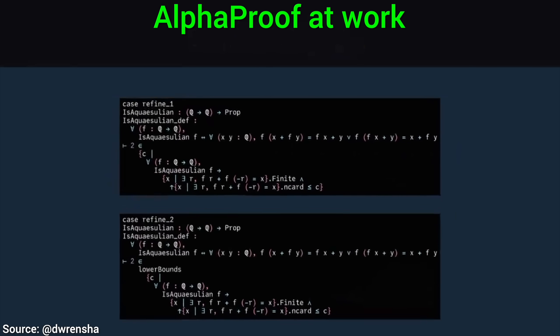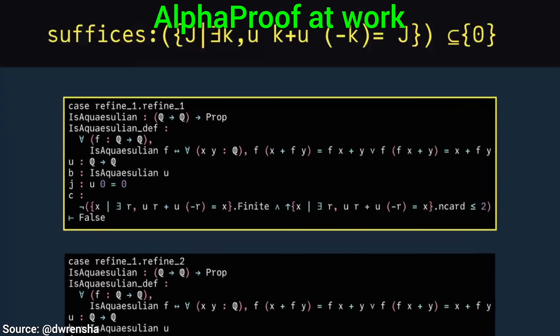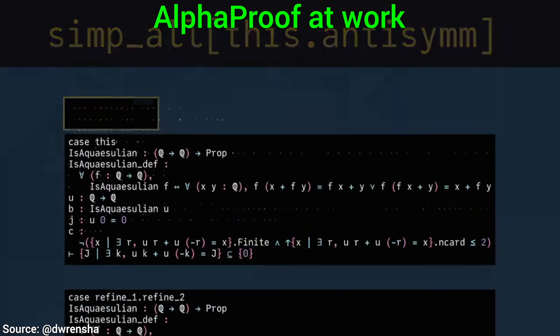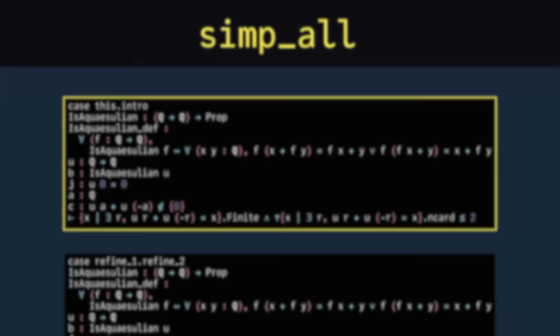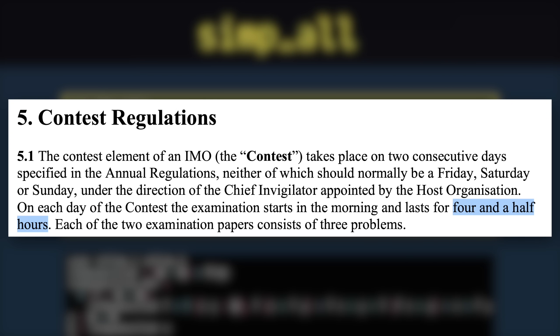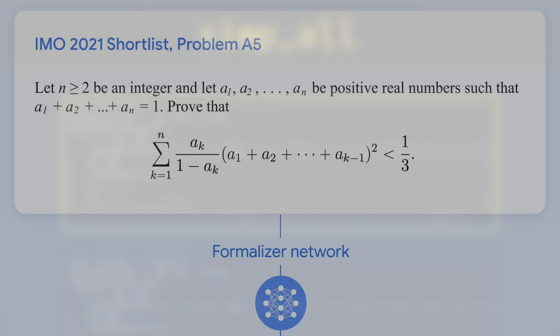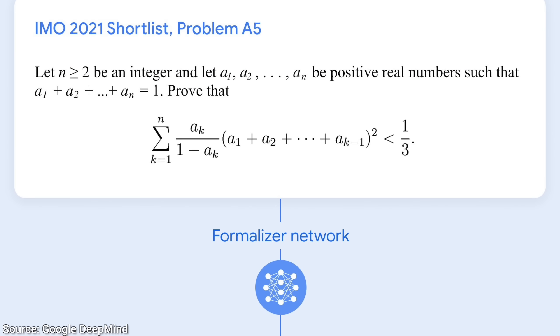Here you see Alpha Proof at work. And goodness, just look at it go! At the Mathematical Olympiad, humans are given two sessions of four and a half hours each to do all the proofs for a total of six problems. So, here's how it went down with the AIs.